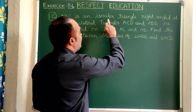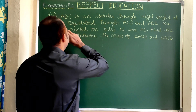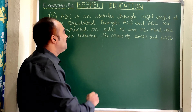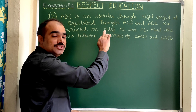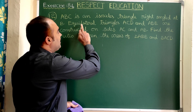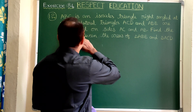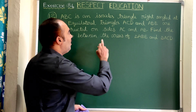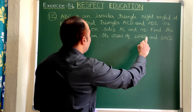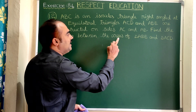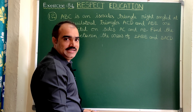ABC is an isosceles triangle right angled at B, which means ABC is a right angled isosceles triangle. Equilateral triangles ACD and ABE are constructed on sides AC and AB respectively. Then find the ratio between the areas of triangle ABE and triangle ACD.